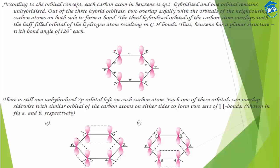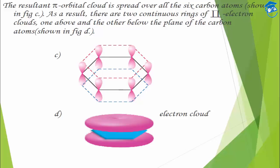All six carbon atoms have one p orbital, each with one electron. There is a possibility of sideways overlap, so they overlap sideways to form a pi bond. There are two possibilities: either carbons 1–2, 3–4, 5–6 overlap, or carbons 2–3, 4–5, 1–6 overlap. This gives two different resonating structures. Because they flip-flop between these two, this results in resonance, and instead of alternate sigma–pi bonds, we get a continuous pi cloud ring above and below the plane of the carbon nuclei.